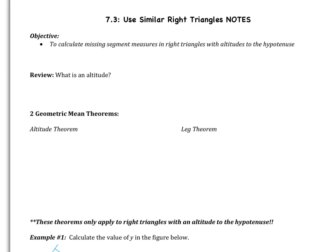Welcome geometers to the section 7.3 video, which is 'Use Similar Right Triangles.' So far we've covered sections 1 and 2, which focused on the Pythagorean theorem and the converse of the Pythagorean theorem. In this video we are going to calculate missing segment measures in right triangles with altitudes to the hypotenuse. This continues with sections 1 and 2 in that we're only talking about right triangles with altitudes to the hypotenuse. So before we jump into the notes, we should probably review what an altitude is.